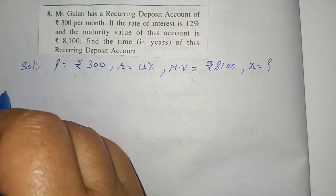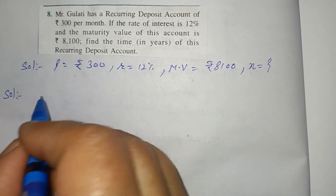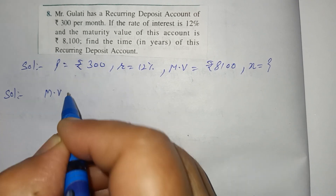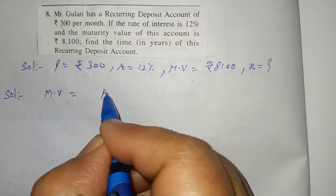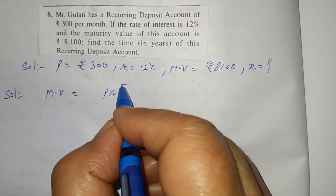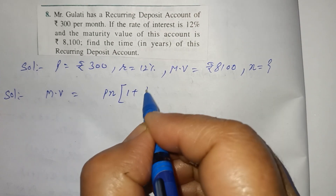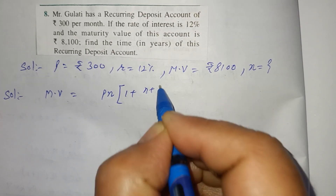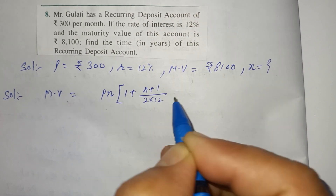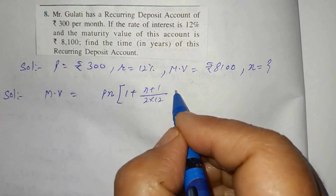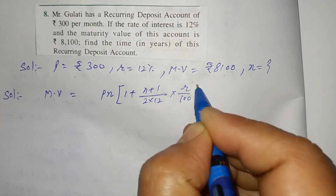Solution. Maturity value ka formula lagao. Maturity value is equal to P·n common, 1 plus (N plus 1) upon (2 into 12) into R upon 100.